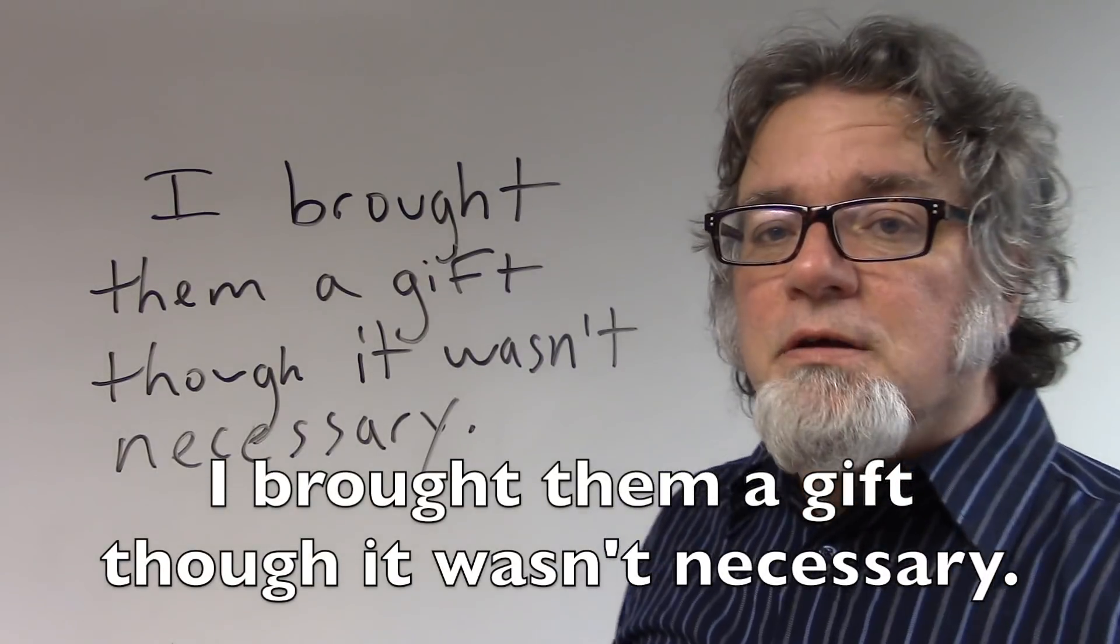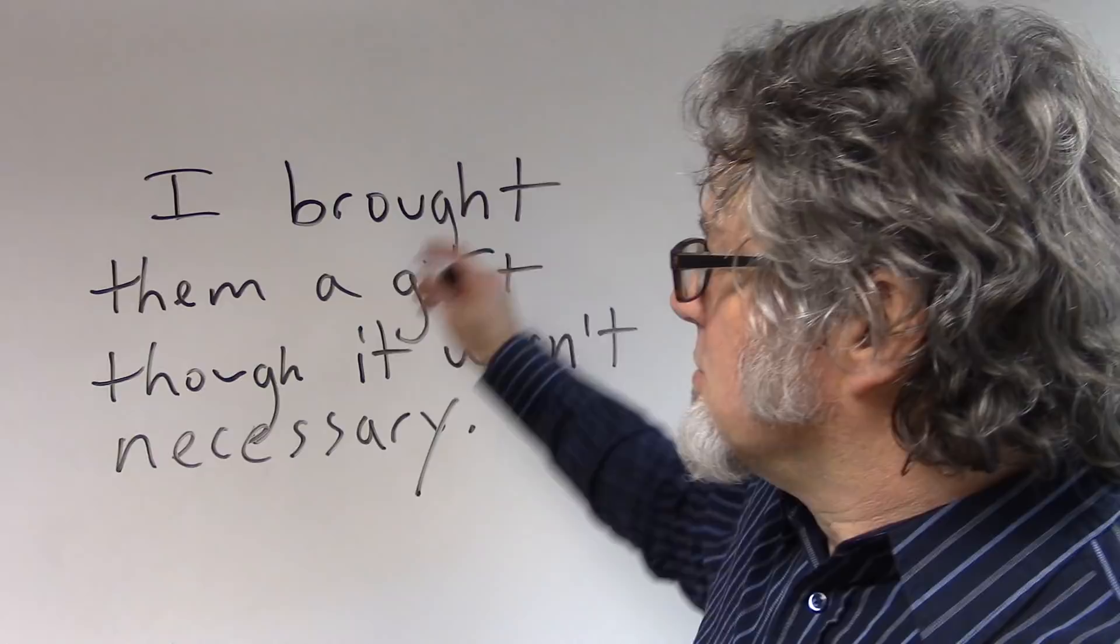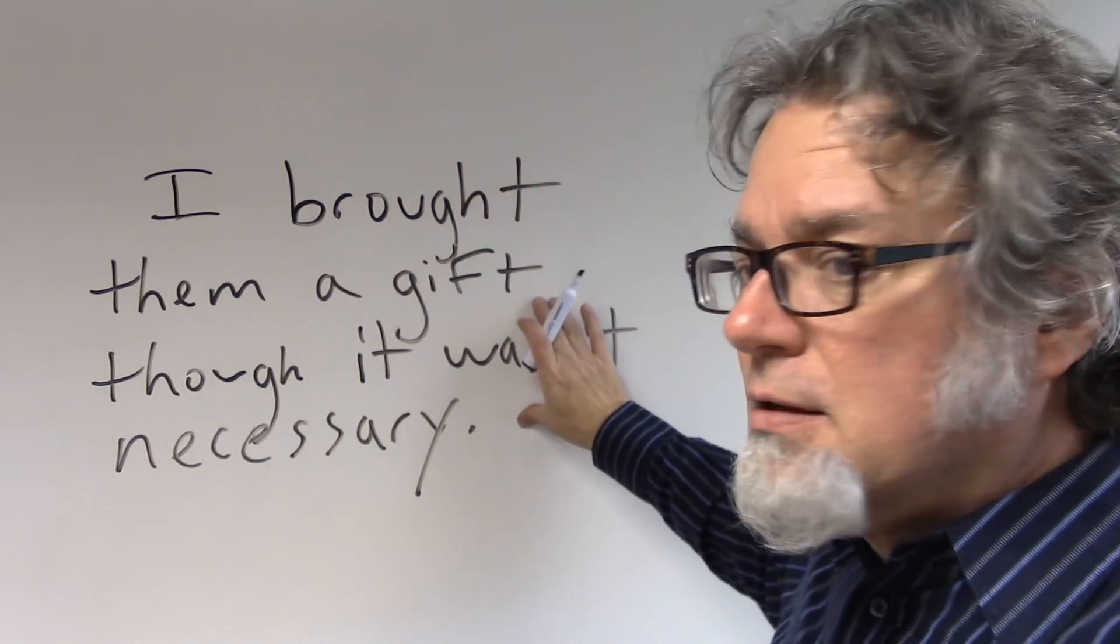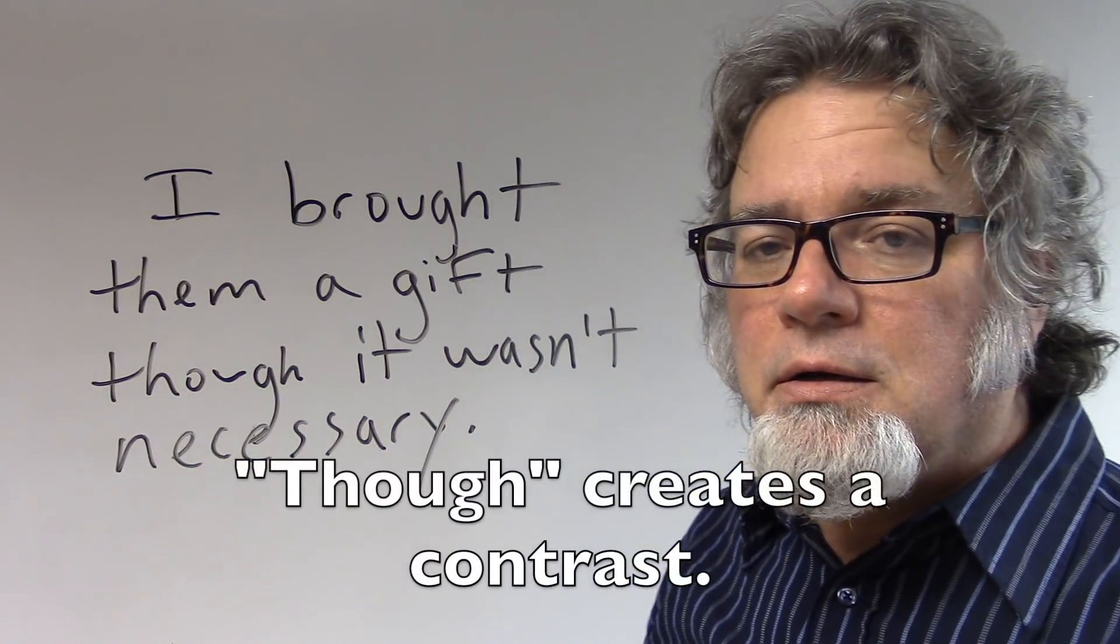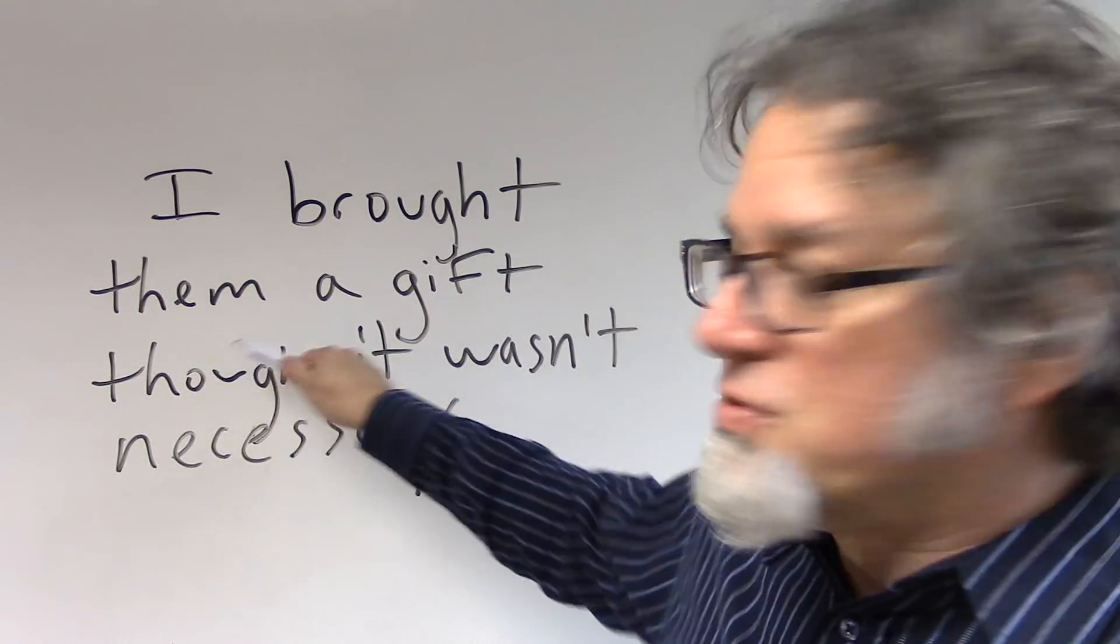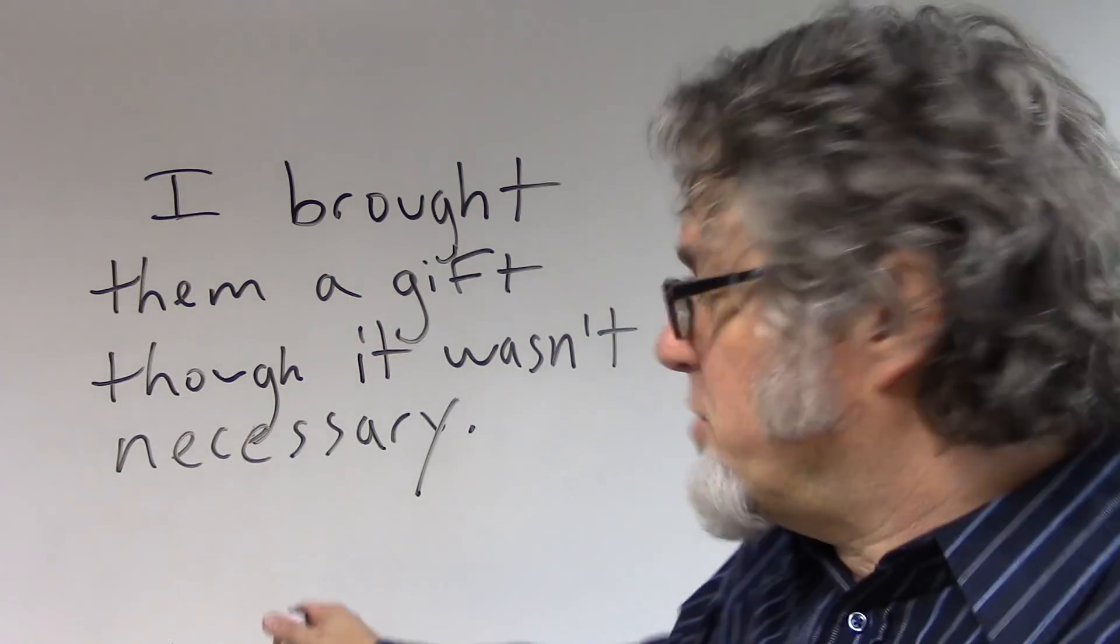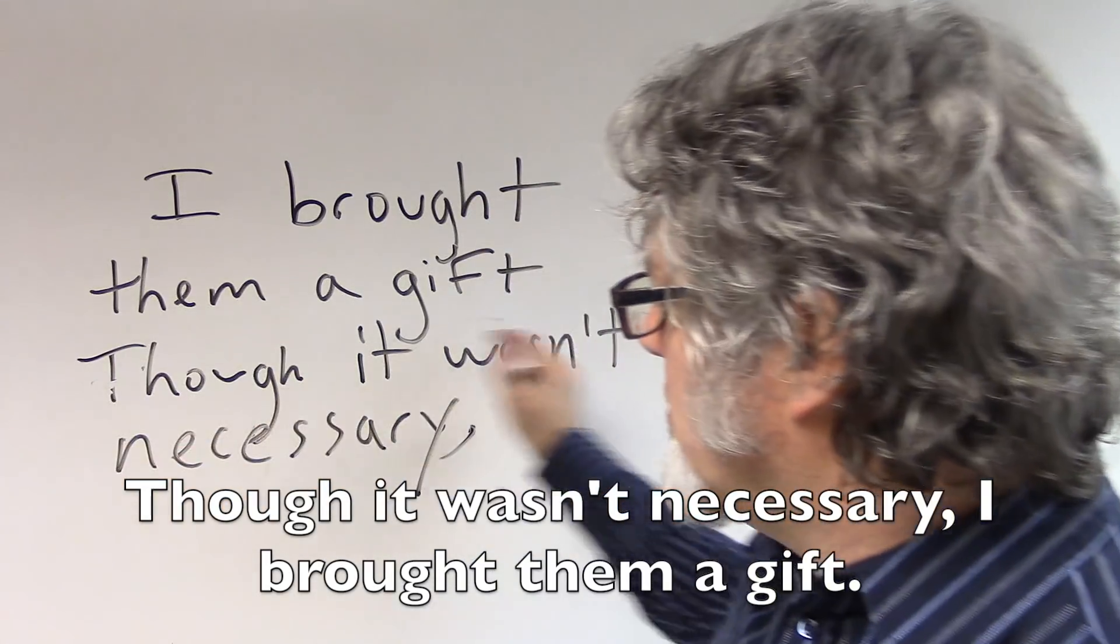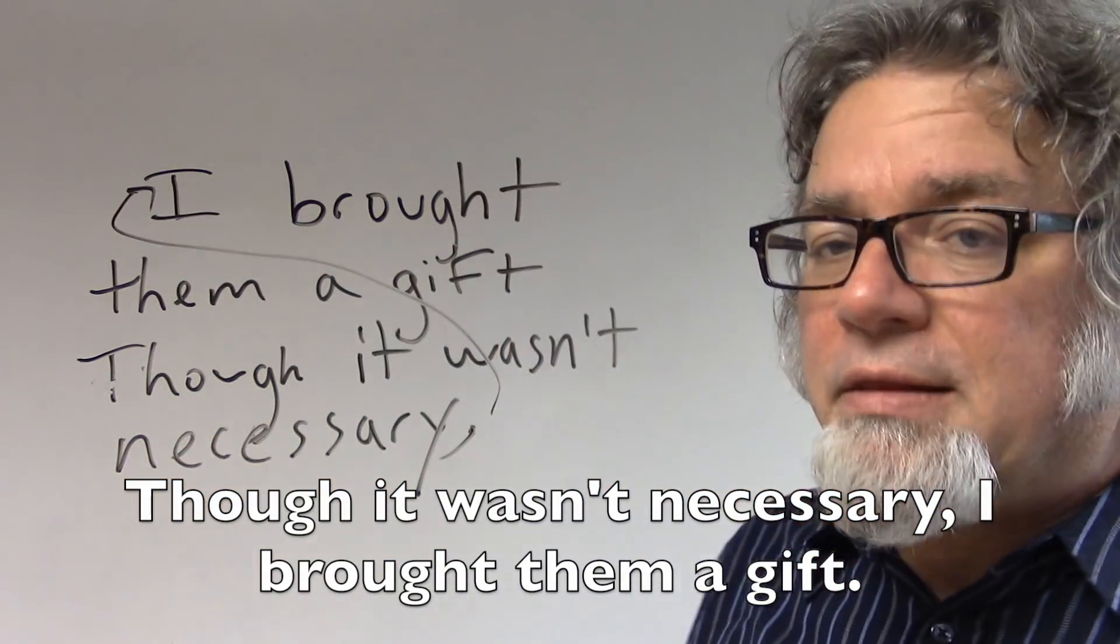I brought them a gift, though it wasn't necessary. So, this is something that I did and there wasn't a reason to do it but I did it anyway. Or you can change the order and put this first though it wasn't necessary and then you put a comma here if you start with this though it wasn't necessary and then you say I brought them a gift.